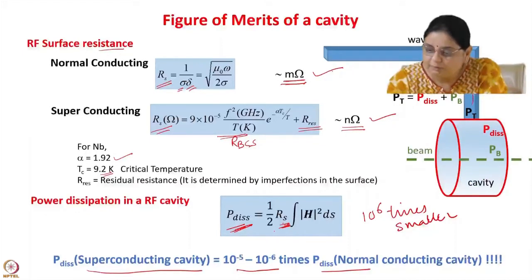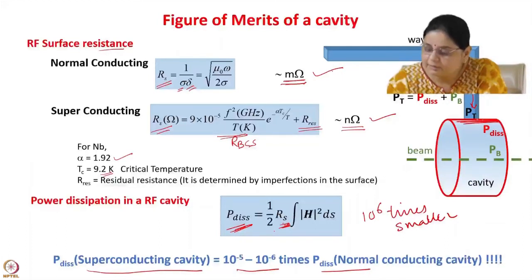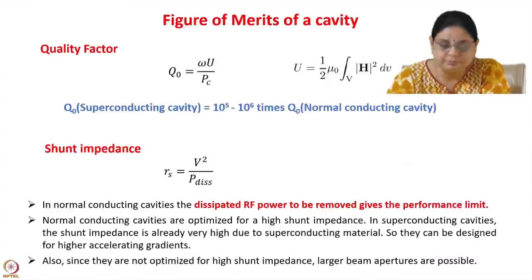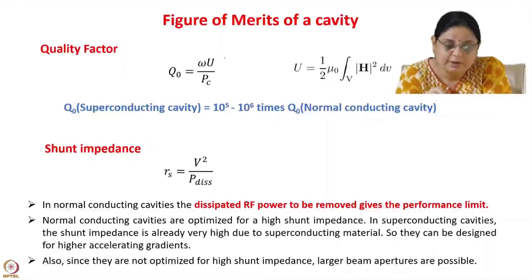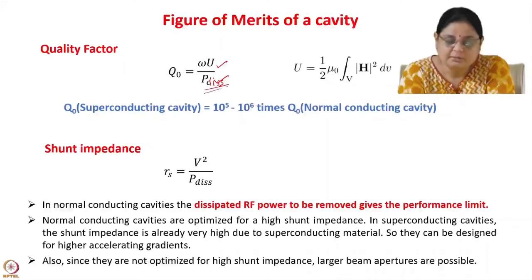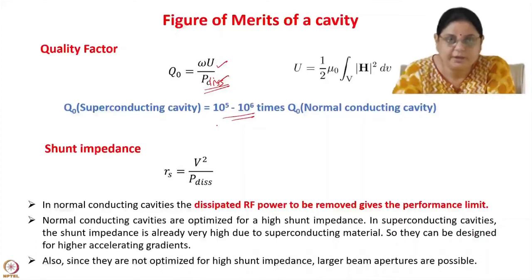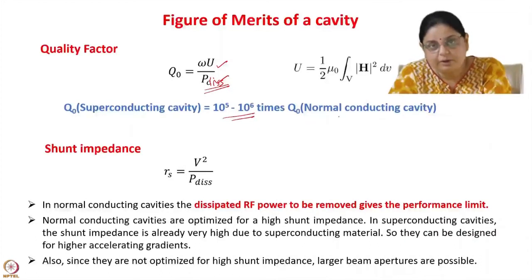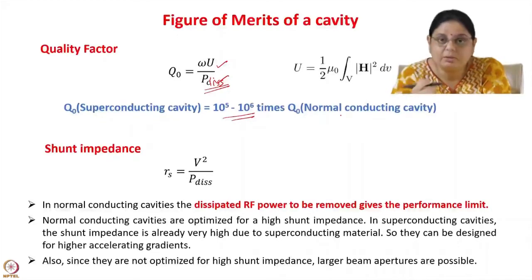Almost all the power going into a superconducting cavity goes to the beam. The quality factor Q, defined as the ratio of stored energy to power dissipated at a given frequency, is 10⁵ to 10⁶ times higher in a superconducting cavity compared to a normal conducting cavity.